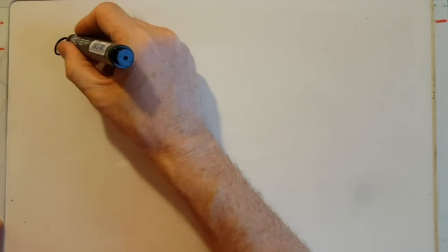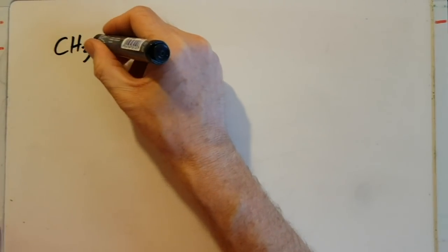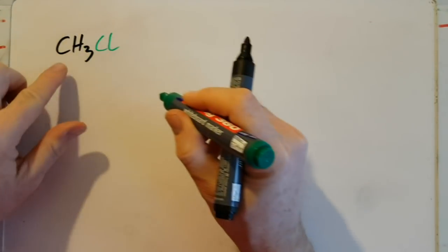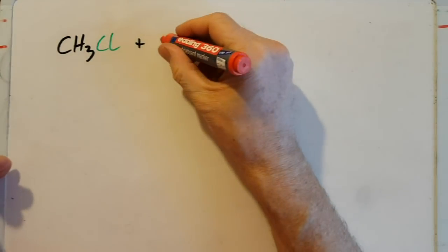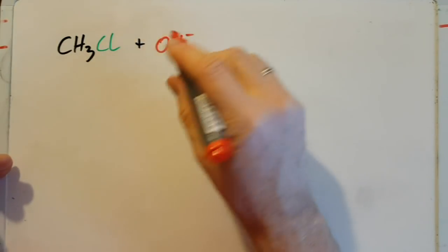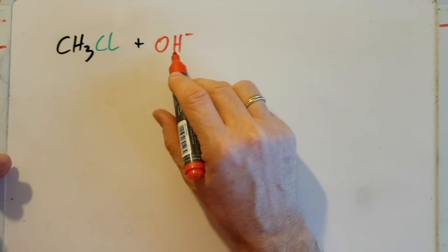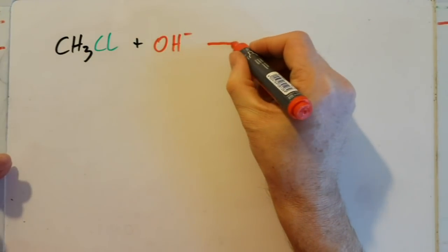Sticking with the absolute minimum that the syllabus has in it, you have a haloalkane, for example chloromethane (CH3Cl), and it reacts with a nucleophile. The only nucleophile you need to know according to the syllabus is the hydroxide ion.